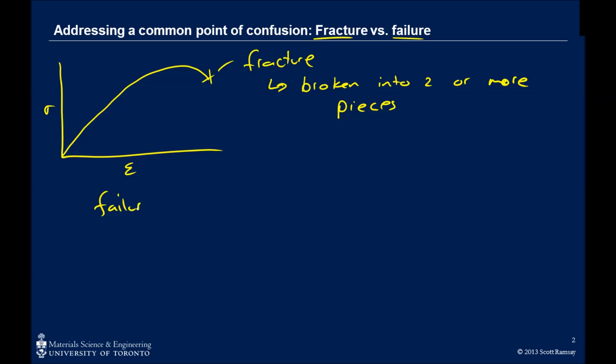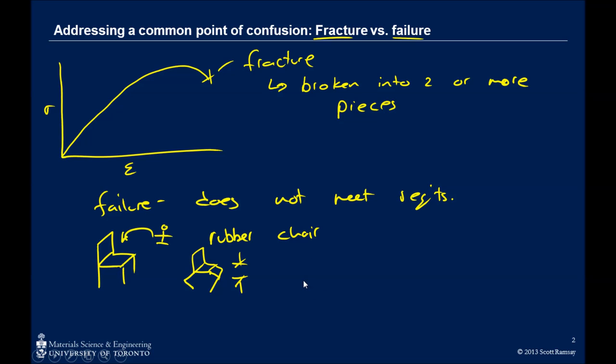Failure, on the other hand, is just when something does not meet the requirements. Our requirements might be to support someone's load at a certain height, as is the case for a chair. You can imagine if we designed a chair out of rubber. When that person sits on that rubber chair, it's going to deform substantially. The legs will probably buckle, and that chair is going to fall down to a pretty low level above the ground, and it might not really be a very useful chair. In fact, you'd probably say that that chair has failed. You sit on it and end up sitting on the floor essentially. You may stand up and find that the chair has not plastically deformed, it's not fractured, but it still failed because it didn't fulfill the requirements of that design.